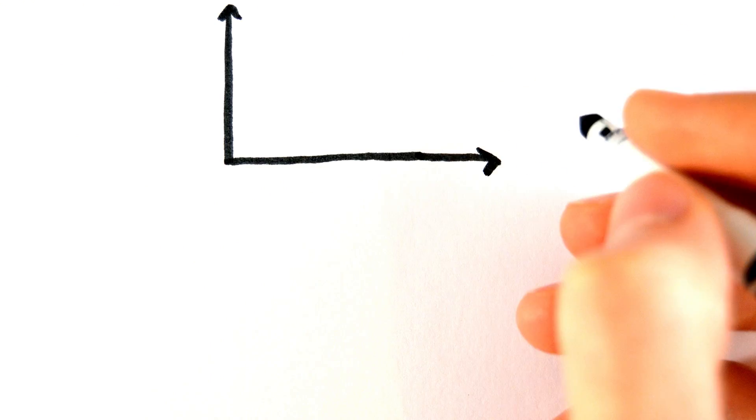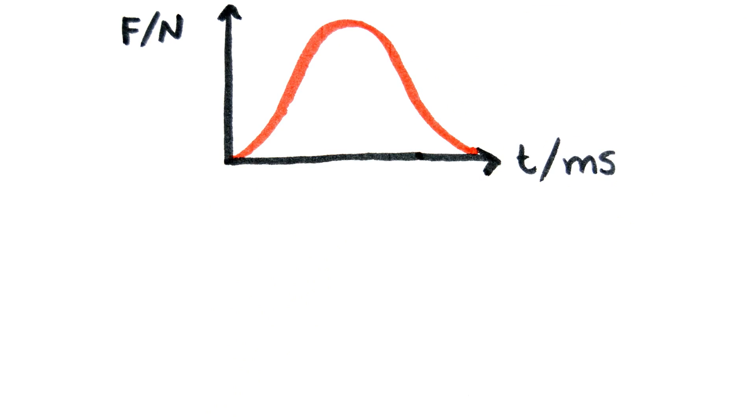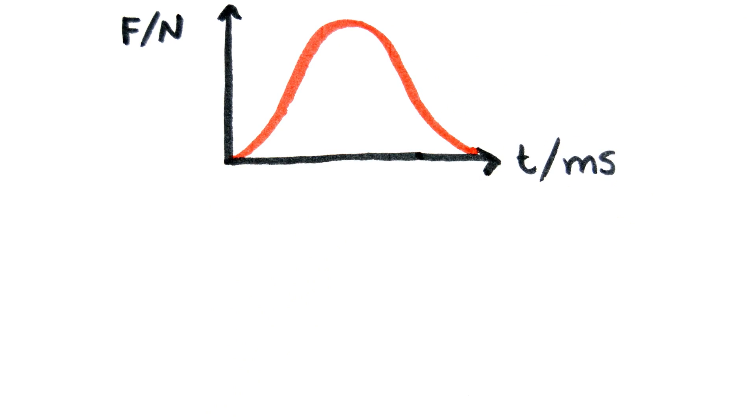You can plot a force-time graph to show how a force varies with time. The area under this graph is the impulse of the force.